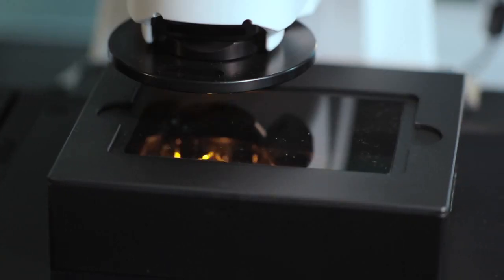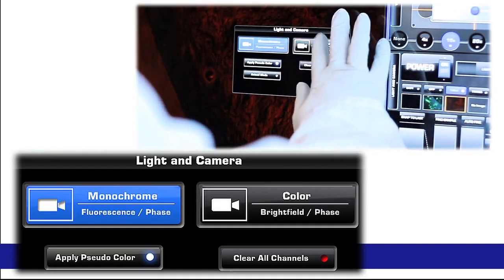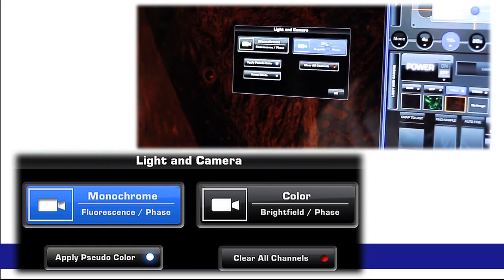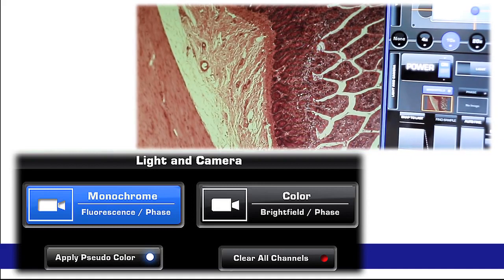Whether performing fluorescent or colorimetric assays, the EVOS FL Auto is equipped with monochrome and color cameras allowing the capture of high-resolution images in either format. Changing between cameras is as simple as touching the screen.